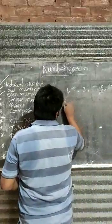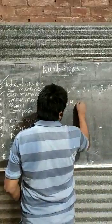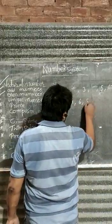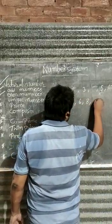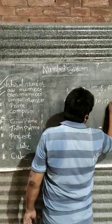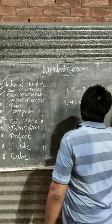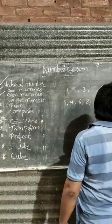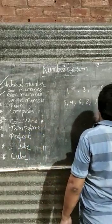For example, 2, 4, 6, 8, 10, 12, 100... dot dot dot, infinite.